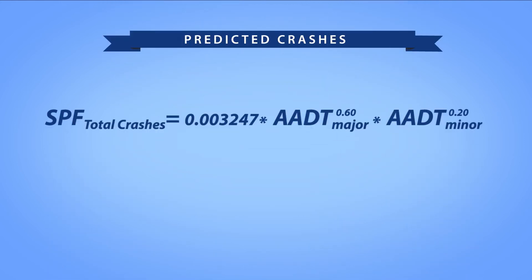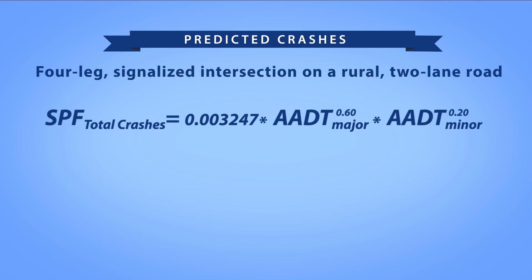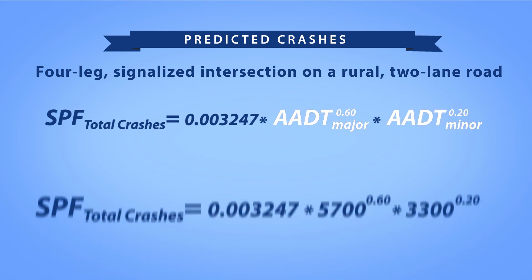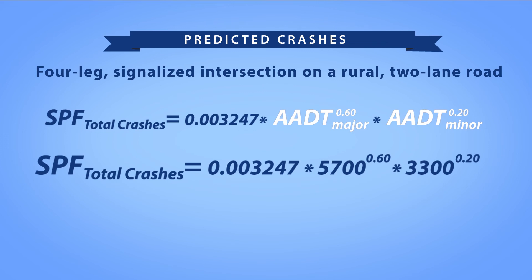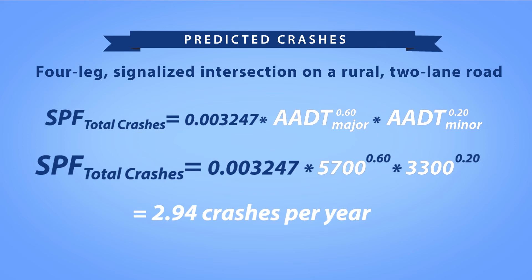To estimate the predicted crash frequency, you need a calibrated SPF for the facility type of interest. Let's assume the facility type of interest is a four-leg signalized intersection on a rural two-lane road, and that this SPF from the Highway Safety Manual represents an appropriate calibrated SPF. The SPF requires the major road traffic volume and minor road traffic volume as data inputs. If the major road volume is 5,700 vehicles per day and the minor road volume is 3,300 vehicles per day, then the predicted crash frequency is 2.94 crashes per year.